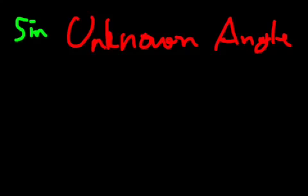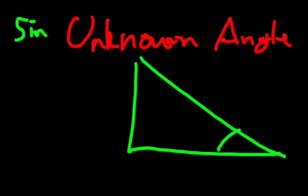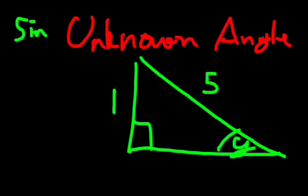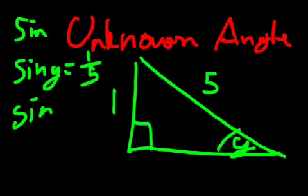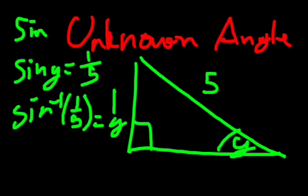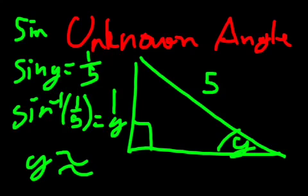Draw a triangle. This is angle Y. This is right angle. This is 5 and this is 1. So you should know how to do this now, so you can just pause the video. Sine Y is equal to opposite over hypotenuse, 1 over 5. Then sine negative 1 of 1 over 5 is equal to Y. Y is approximately equal to 11.54 degrees.